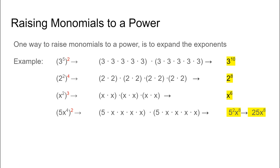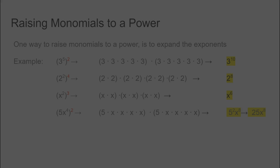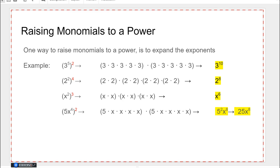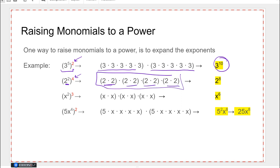When raising a monomial to a power, we're going to look at the expansion again. So if we've got three to the fifth all raised to the second power, that means I'm going to take this and write it two times. Now fully expanded, I can see how many I have altogether — I have 10. This means I've got two to the second four times, so one, two, three, four times — condensed, I get two to the eighth. X to the second three times I get x to the sixth, and finally five x to the fourth two times I get five to the second x to the eighth.